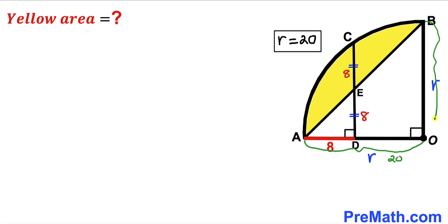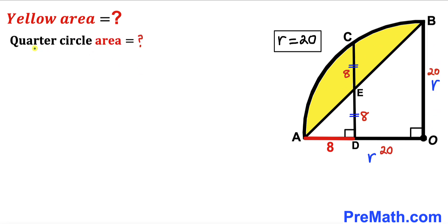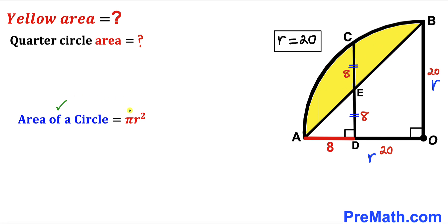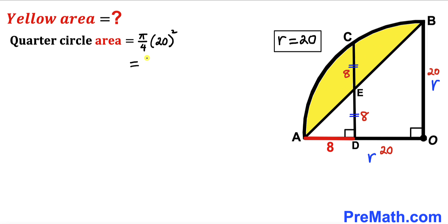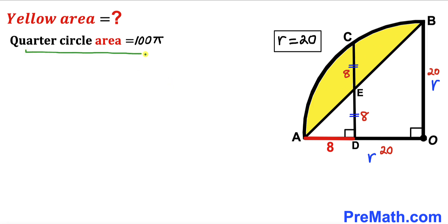Now we calculate the area of the quarter circle. Recalling the area of a circle formula, area equals πr², the quarter circle area is πr²/4. Substituting r = 20: π × 20² / 4 = 400π / 4 = 100π square units. So the area of the quarter circle is 100π.